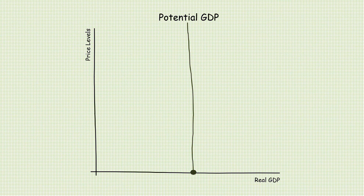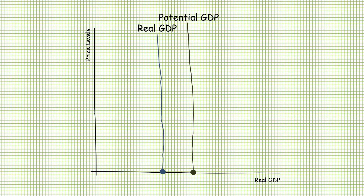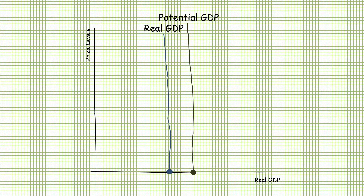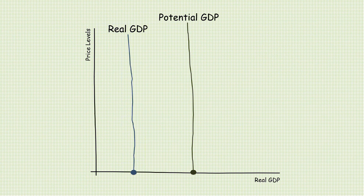Real GDP, on the other hand, is the country's actual economic output. Real GDP can change based on a country's inflation and production levels. Real GDP can be below potential GDP, upon which the economy is underperforming and its resources are underutilized.